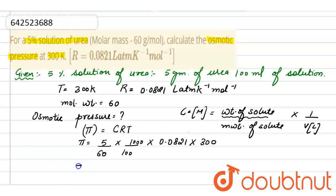By solving all this, the value of osmotic pressure is 2.52 atmospheric.